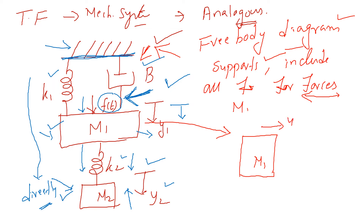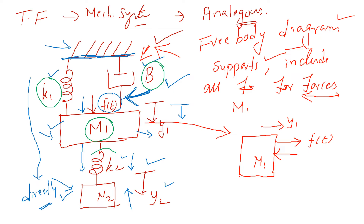We remove the support and show only the forces. The external force direction is one way, and internal forces are in the opposing direction. The forces acting on M1 include: force due to K1, force due to the dashpot B, force due to mass M1 inertia, and force due to K2 on M1. These mechanical components are attached to M1, and they generate internal opposing forces.